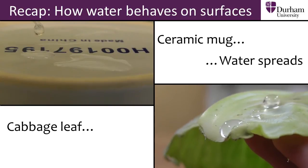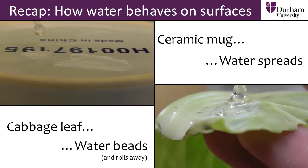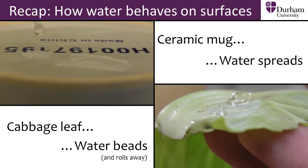Then we saw surfaces, like a cabbage leaf, where the surface does not like to be in contact with water, and so droplets can't spread. Instead, they sit on the surface as beads of water or roll away.